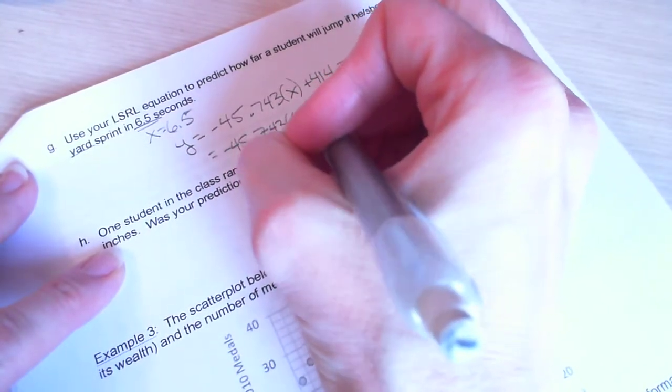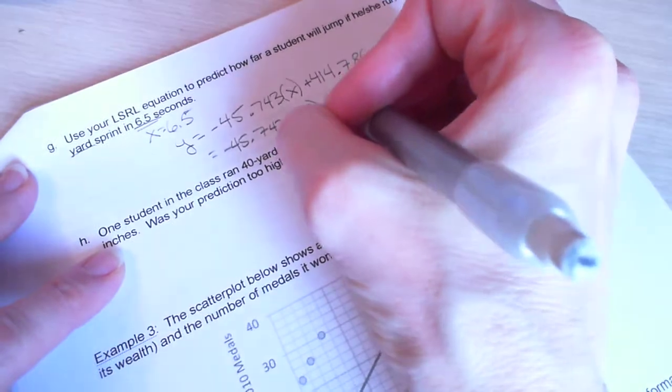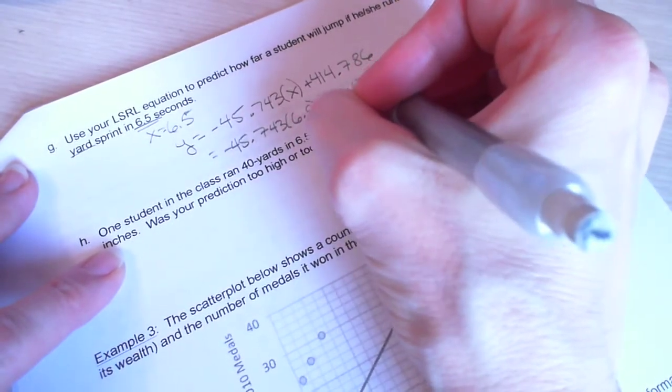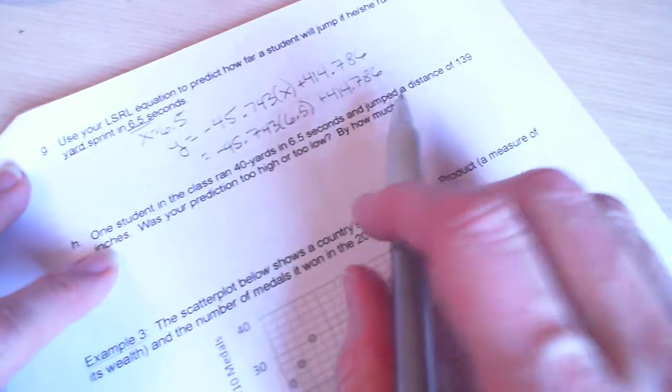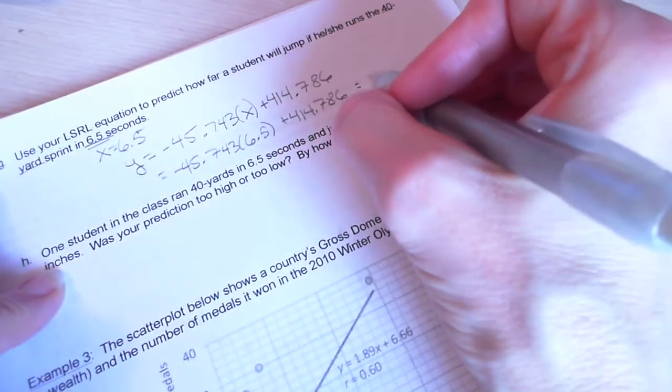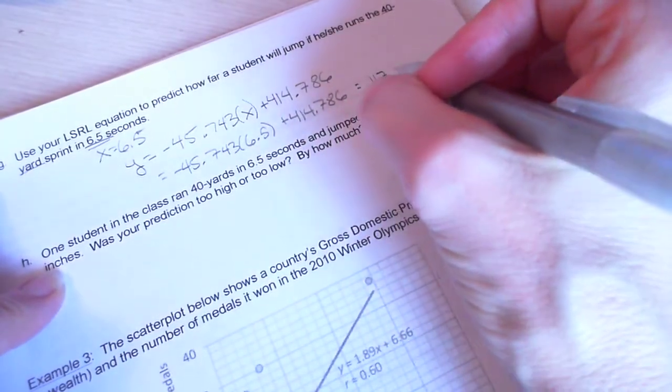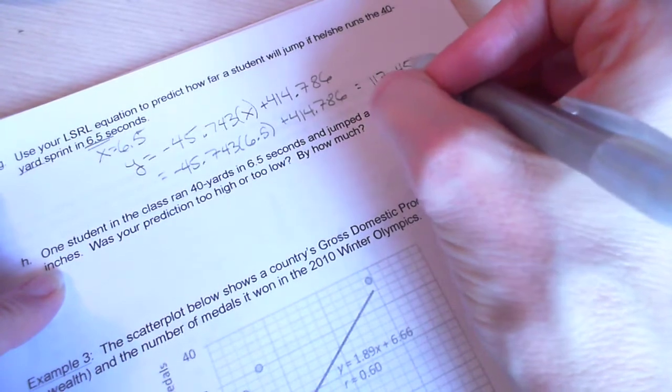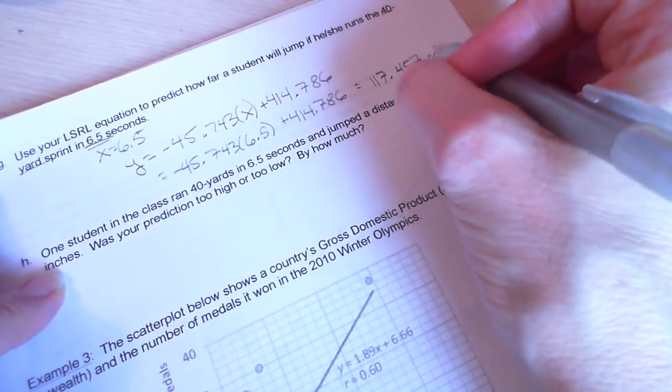And I want to substitute in place of x, I want to put that 6.5. So, this is what I'd have. In place of x, I'm putting in 6.5. And then, I need to multiply that all out.